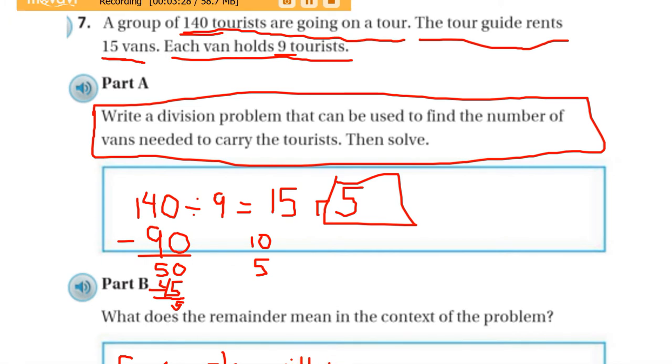Okay. So, part C, how can you use your answer to determine if the tour guide rented enough vans? Well, I can use my answer from part A. He rented 15 vans. Well, I see that 15 vans, if he only gets 15 vans, there's going to be 5 people without a ride. So, how can I use that answer to determine if the tour guide rented enough vans? I can look at the remainder.